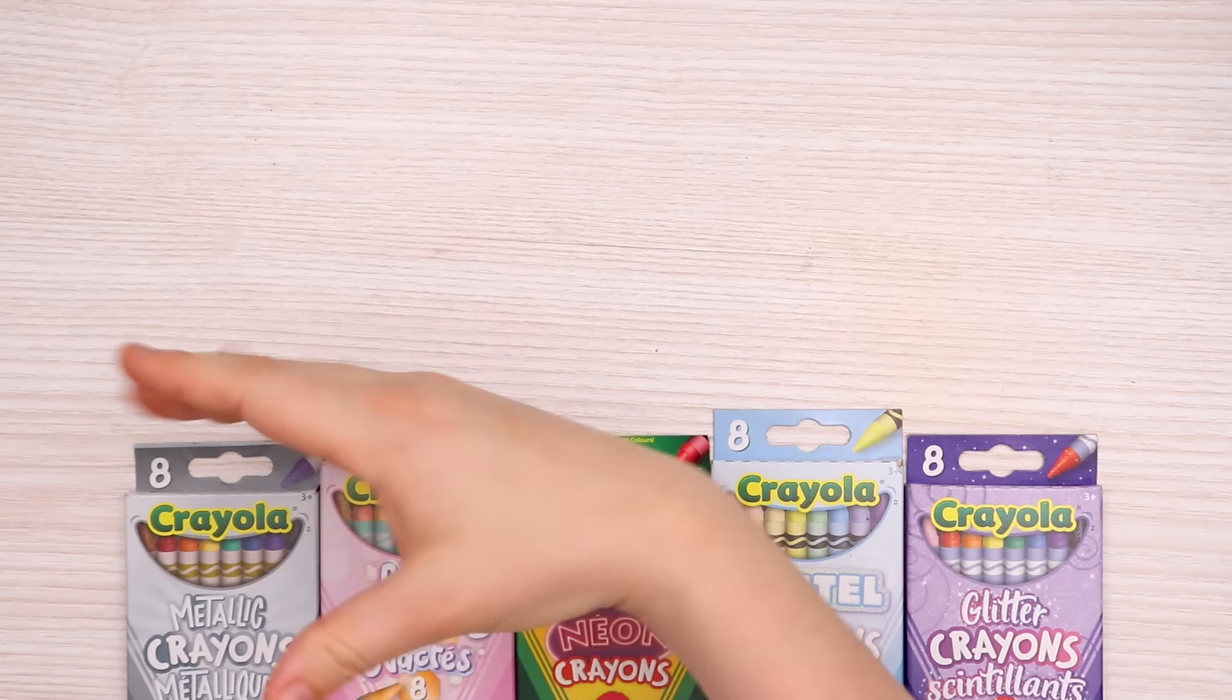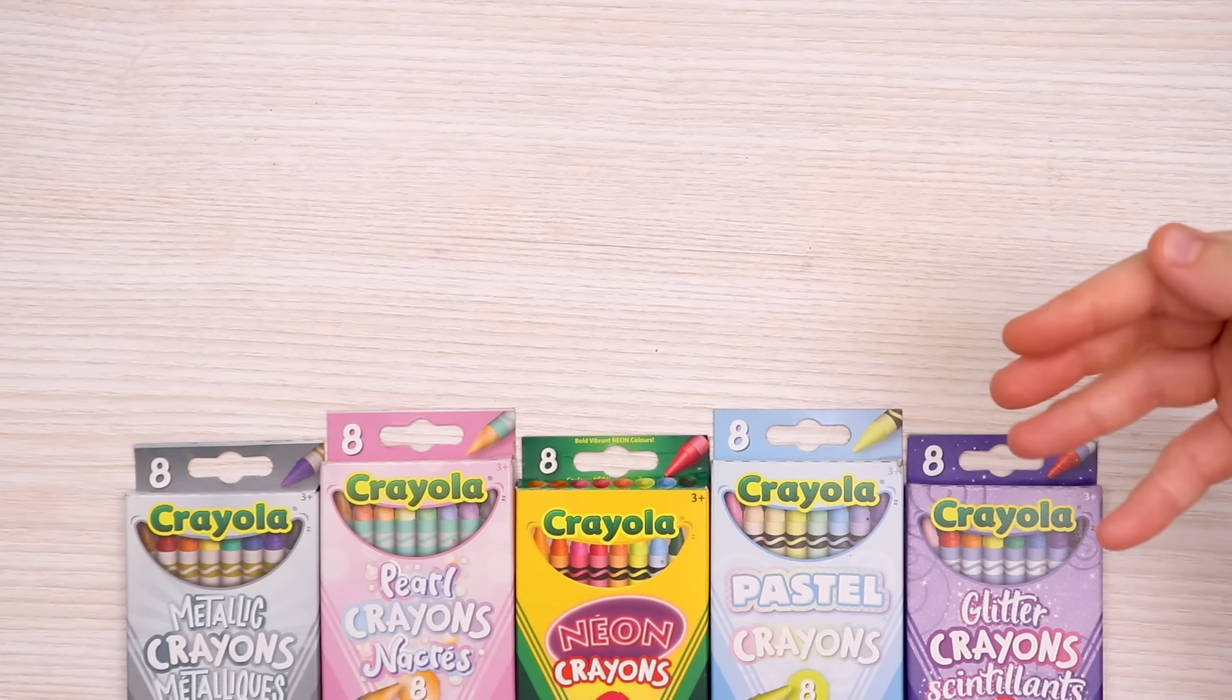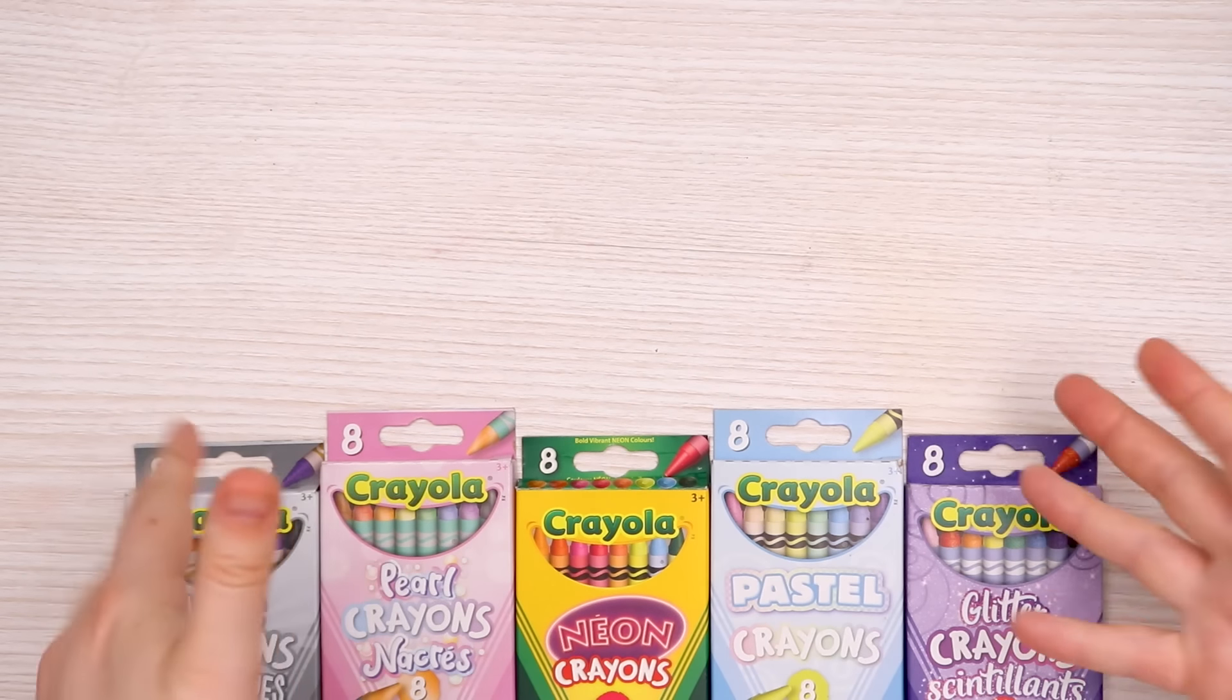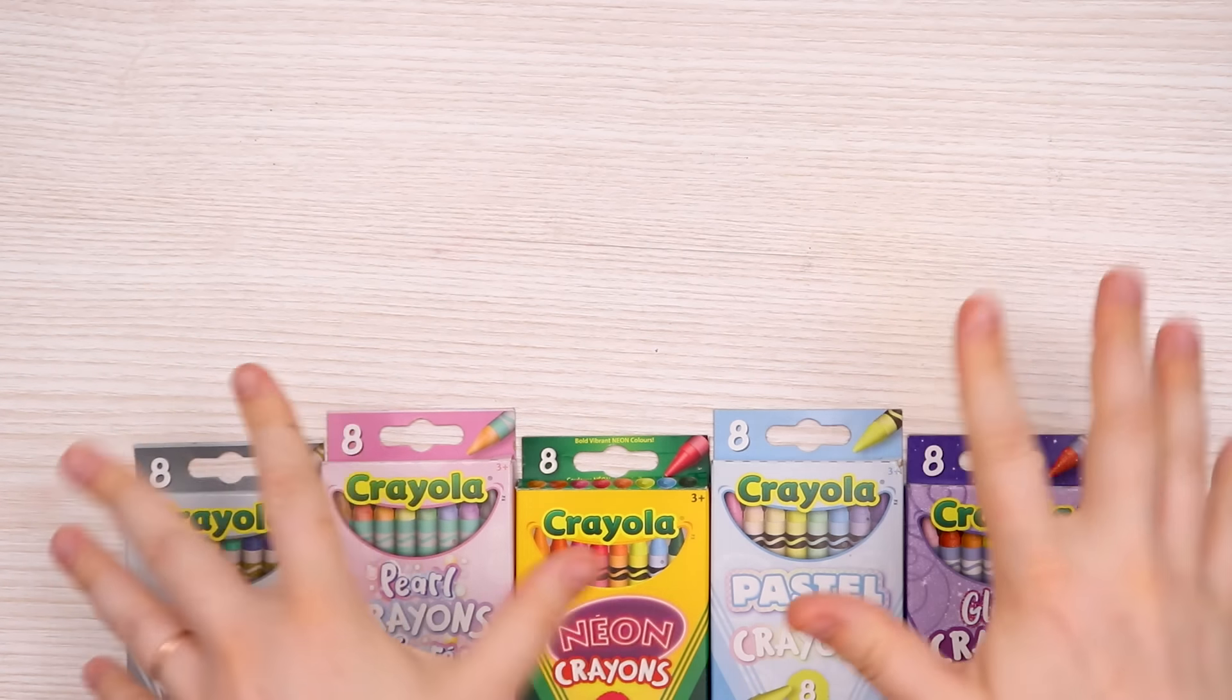We have metallic. Maybe I'll make a robot. Glitter. Something glittery. We have five packs of eight crayons. Let's get started.